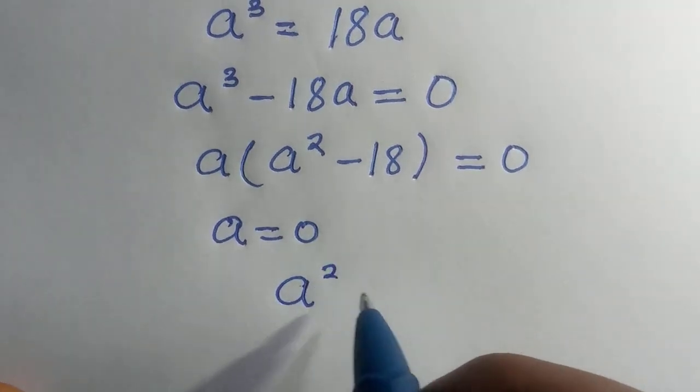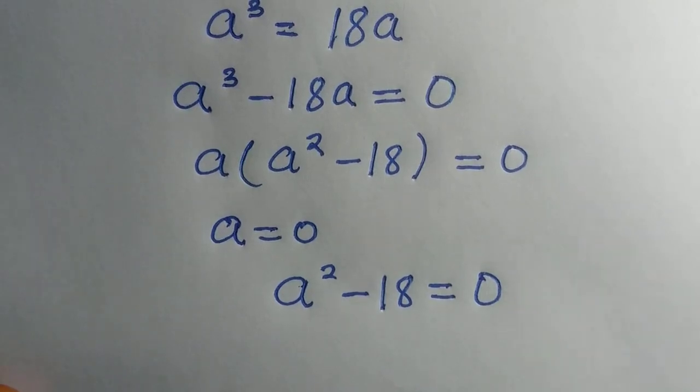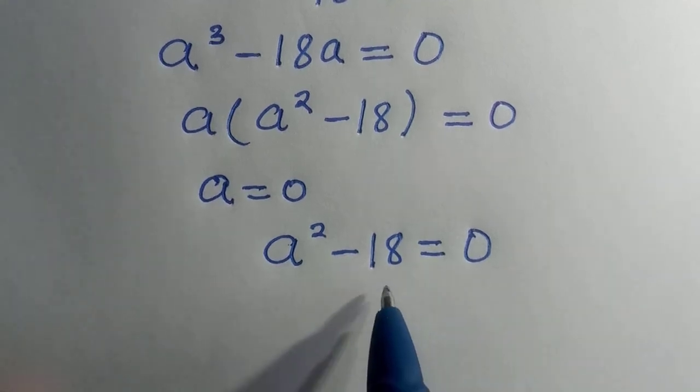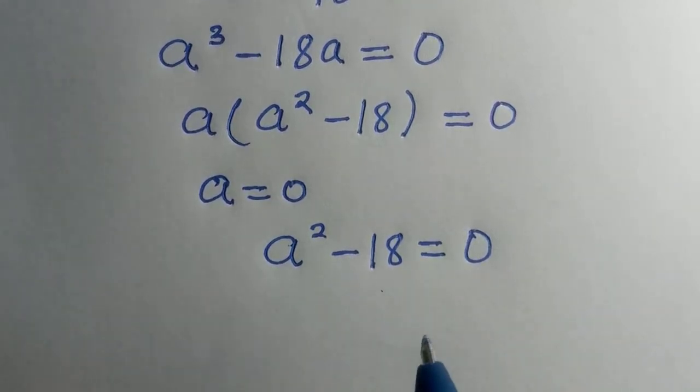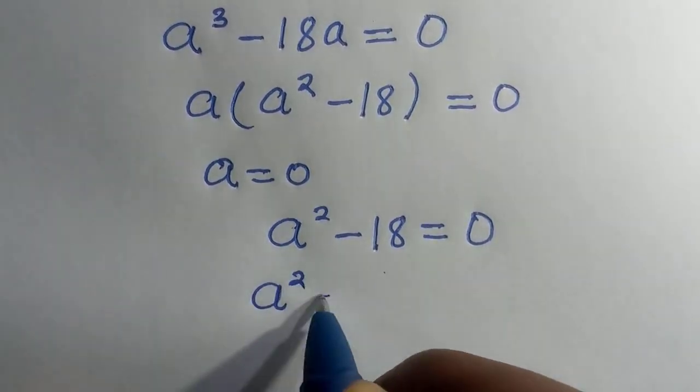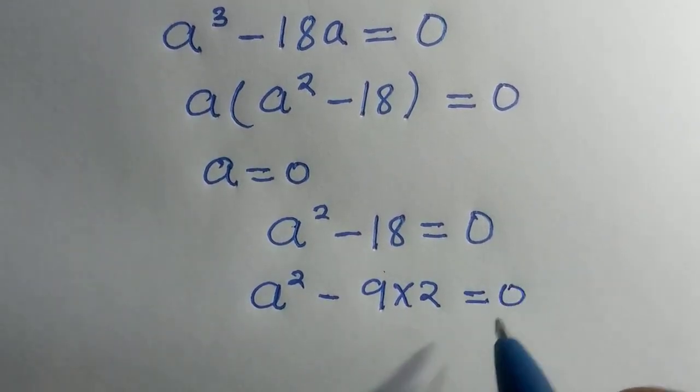A squared minus 18 equals 0. So to have the full solution to this, we are going to consider from this 18, the 18 can be written as 9 multiplied by 2, everything equals 0.